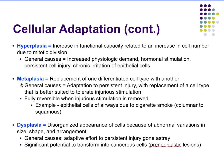Metaplasia is where you actually replace one cell type with another — an adaptation to meet a change in environment. For example, epithelial cells in your airways will change from columnar cells to squamous cells due to persistent irritation from cigarette smoke. This is reversible: once the stimulus is gone, your cells will revert back.